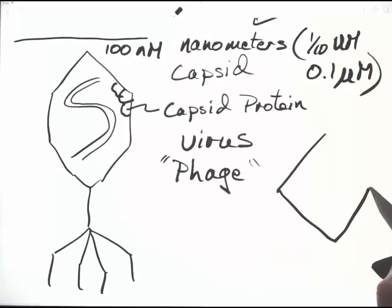Now, you can draw the phage as a diamond, have a single arm going down, and put a couple of capsid proteins on it.